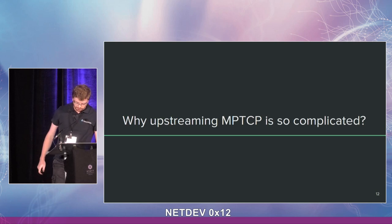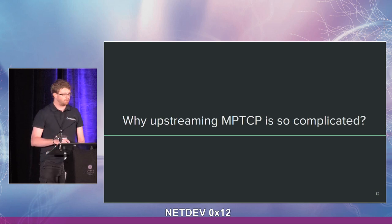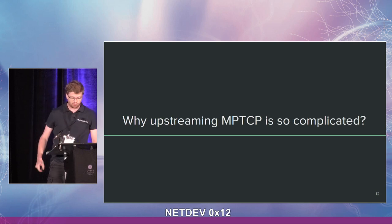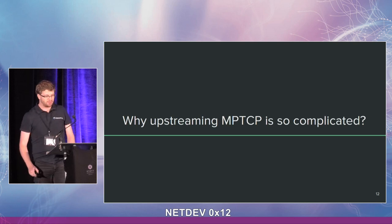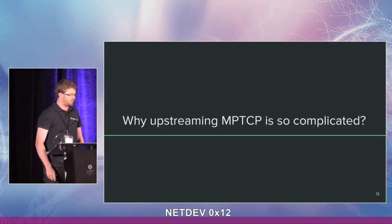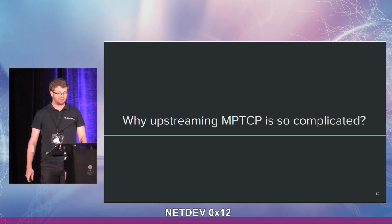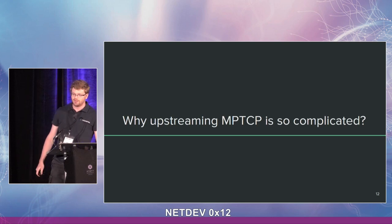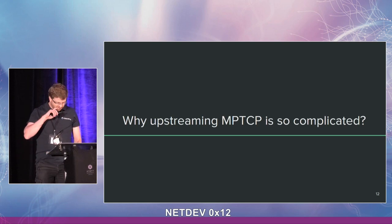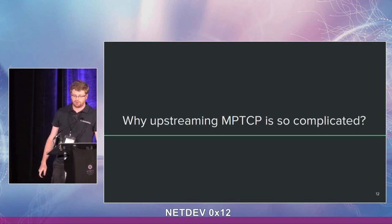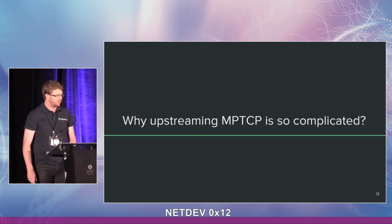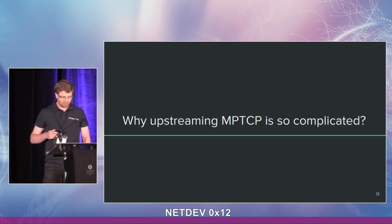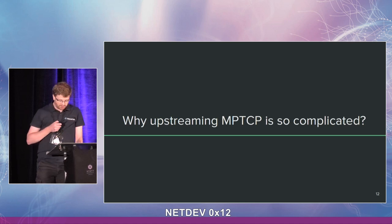That's it for the use cases. At this point, we were expecting some shouting in the audience asking why MPTCP is not in upstream. Well, it's not in upstream, and while it may be easy to say that, it's quite complex. We will explain why it is so complicated to add Multipath TCP in the kernel.